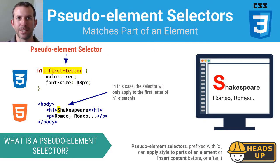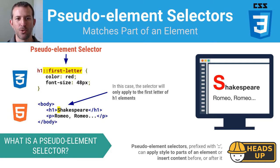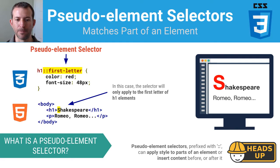Last but not least, pseudo element selectors allow you to do special things like match just part of an element. In this particular case, I'm using the "first letter" pseudo element because I wanted to target just the S in Shakespeare. By using the first letter pseudo element, I was able to take the S, style it individually, coloring it red and making it really big. This is just an example of a pseudo element selector.